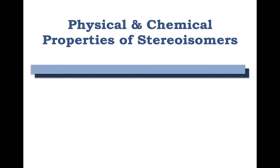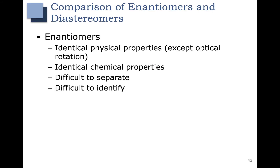In this video, we're going to cover the physical and chemical properties of stereoisomers. If you have a pair of enantiomers, they will have identical physical properties — melting point, boiling point, solubility, things like that. The only physical property that they will not have in common is optical rotation, which we'll talk about more in the next video.